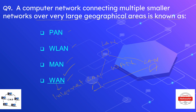The internet contains smaller LANs — for example, right now I am using the LAN at my home and communicating with the WAN using the internet.